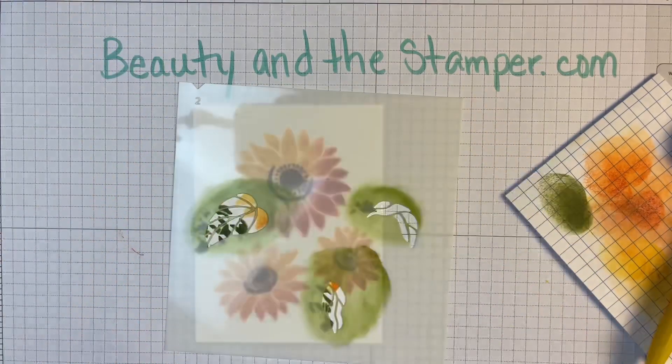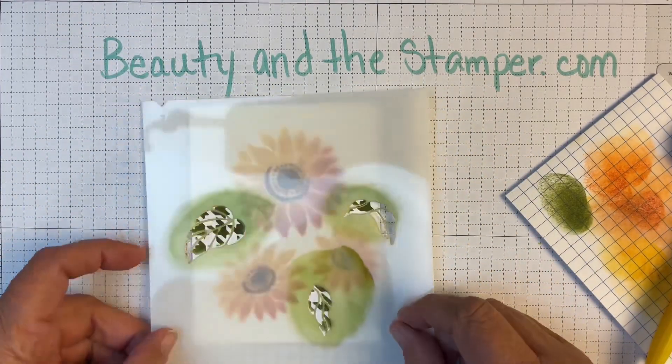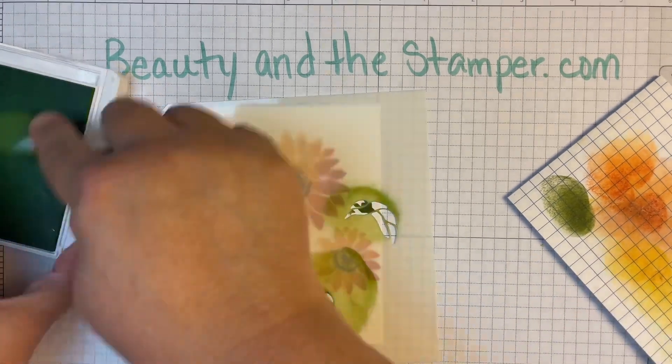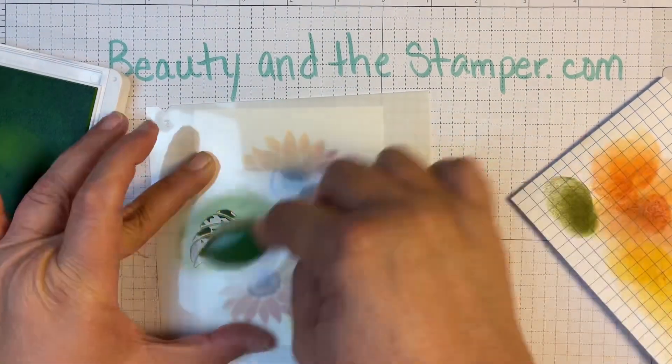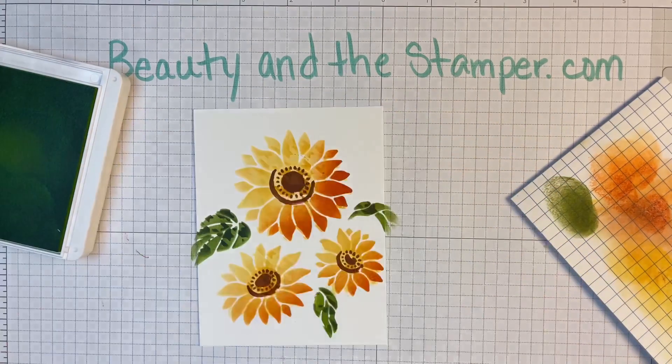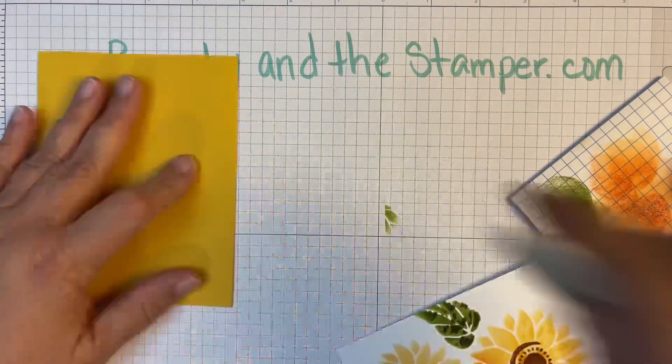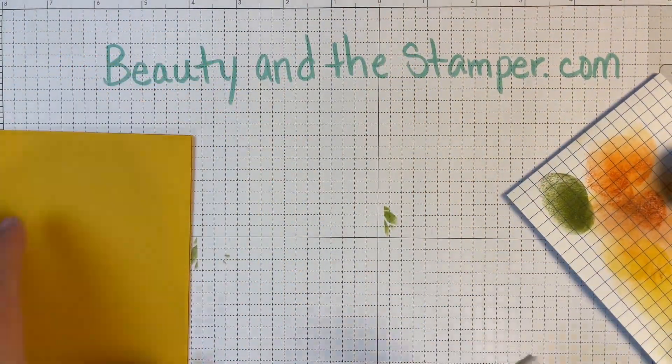Now let's add those leaves. I'm going to use old olive at first and now I'm using a lighter green here. I think it was garden green or granny apple green.